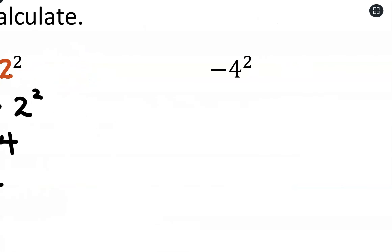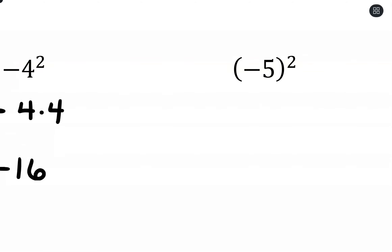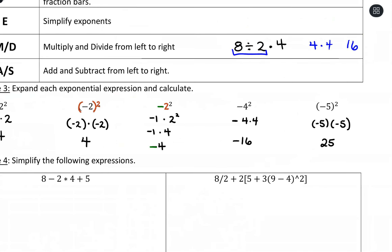So with negative 4 squared and no parentheses, we keep that negative out front and have 4 times 4, which is 16 — so the result stays negative 16. Whereas negative 5 squared with parentheses keeps that negative attached to the 5, so negative times negative is positive, giving positive 25. Just be careful with those parentheses versus no parentheses when you have a negative and an exponent.